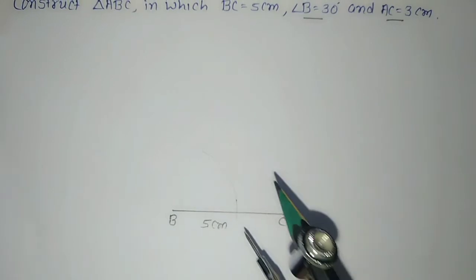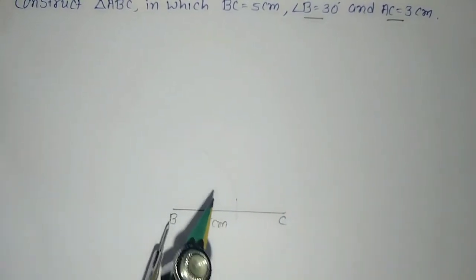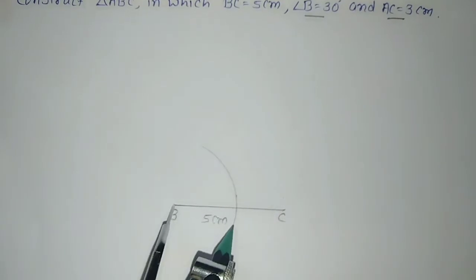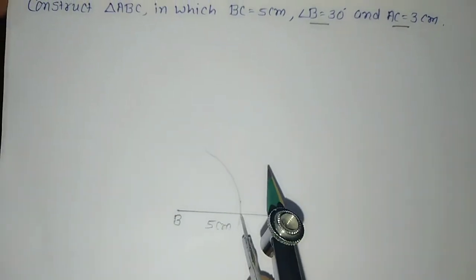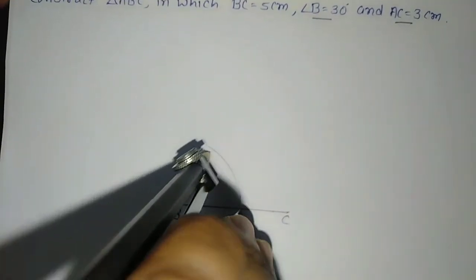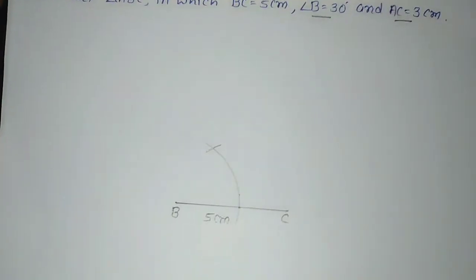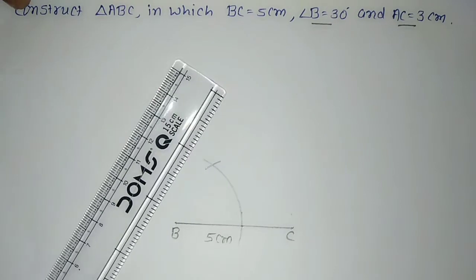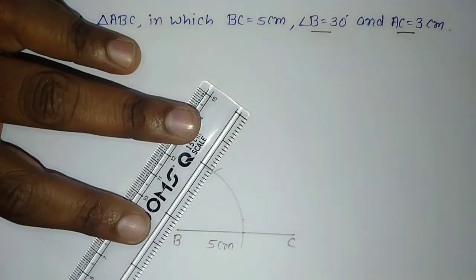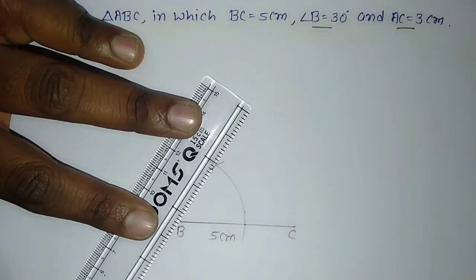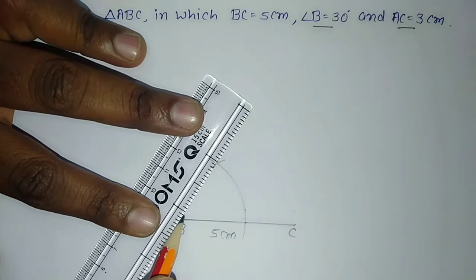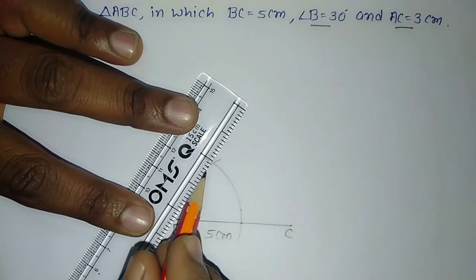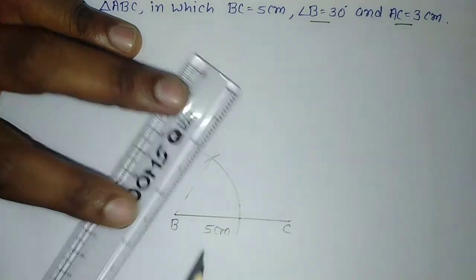We draw it without protractor. This is one arc by keeping point on B. Then I'll put the point over here and draw another arc where both arcs are intersecting each other. This angle is of 60°. But we want 30° so I will draw only the dotted line.